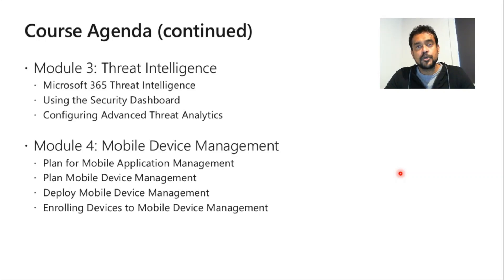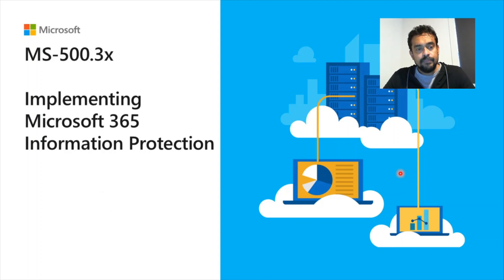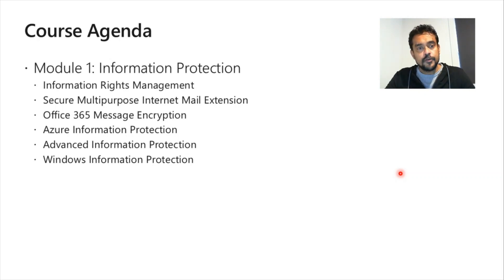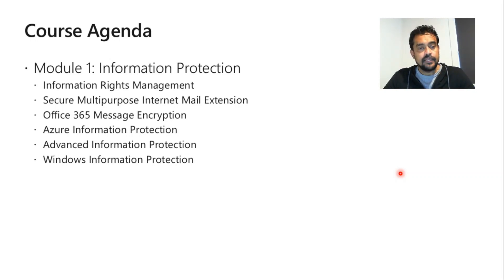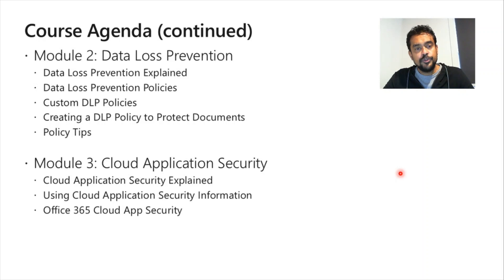The third course is Implementing Microsoft 365 Information Protection. We'll cover Information Rights Management — for example, preventing email recipients from printing or forwarding a message — S/MIME, Microsoft 365 Message Encryption, Azure Information Protection for enforcing encryption on files, Advanced Information Protection, and Windows Information Protection for enforcing encryption at the device level. Module 2 covers data loss prevention (DLP).